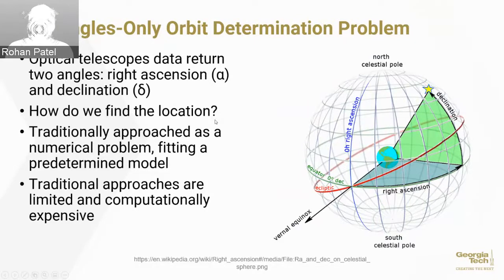The answer is traditionally we take a huge series of images. We'll take five minutes, three minutes, however many minutes of images. We know the time associated with each image. So given the two angles and the time, we take a guess about what the model is and approach this as a numerical problem. We try and fit the data we've collected to a predetermined model.